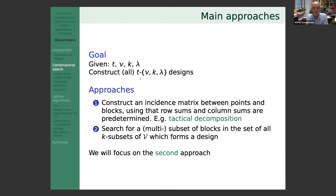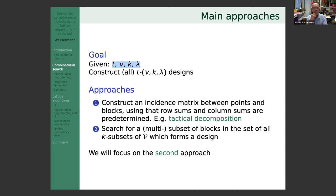Now, combinatorial search. In our example area we have parameters t, v, k, and λ, and we want to construct or enumerate all t-(v, k, λ) designs. I'm aware of two main approaches. In the first approach, a t-(v, k, λ) design is represented as an incidence matrix between points and blocks.